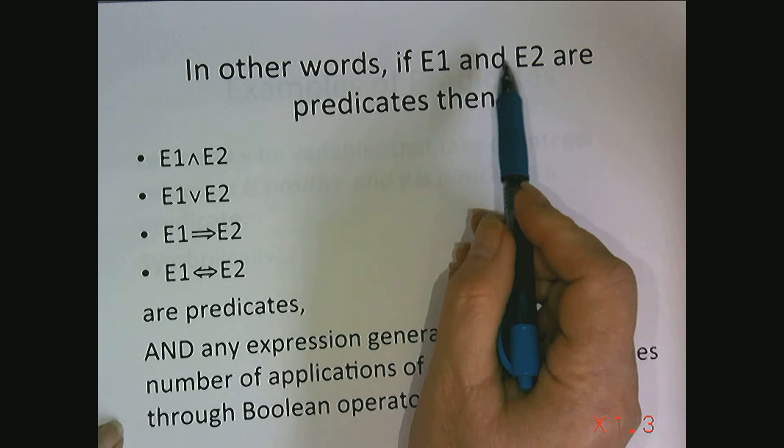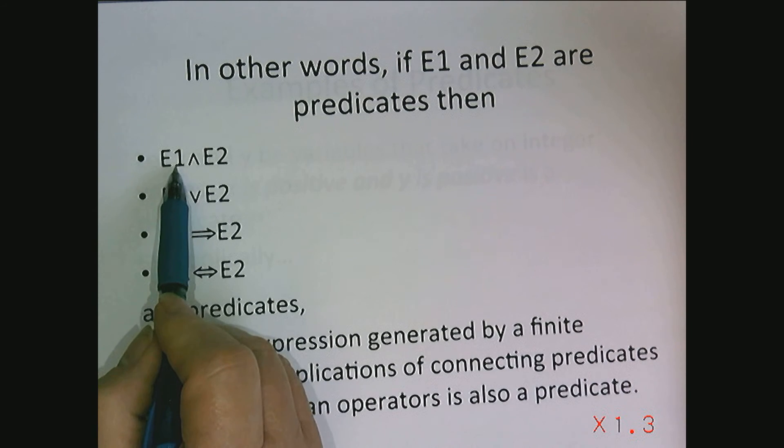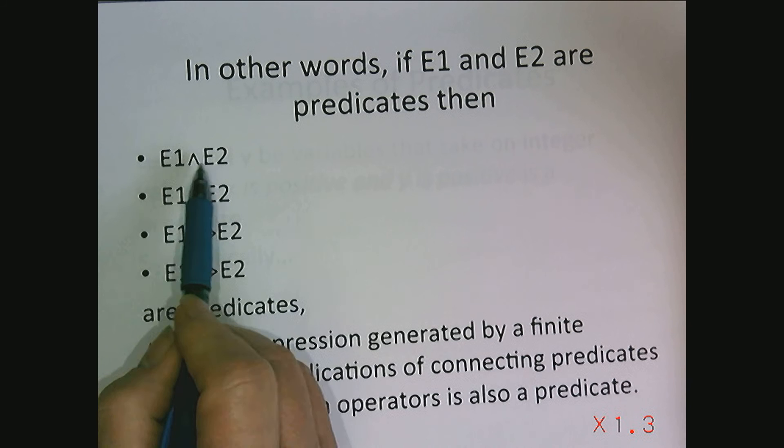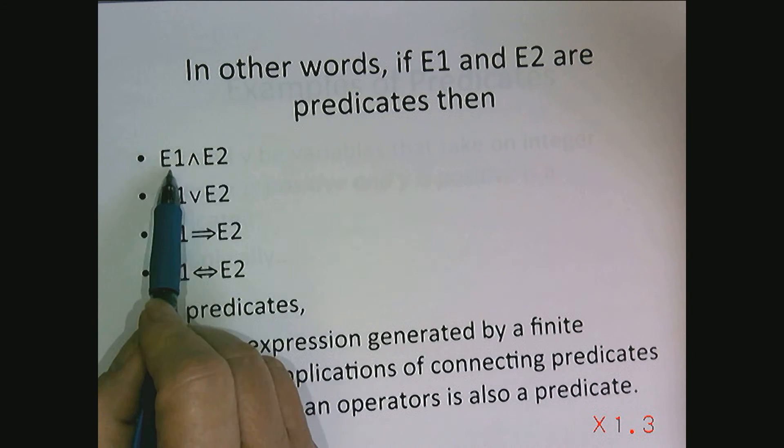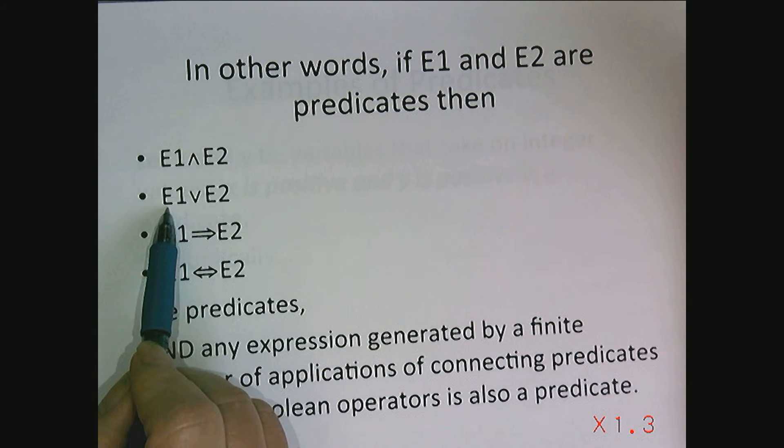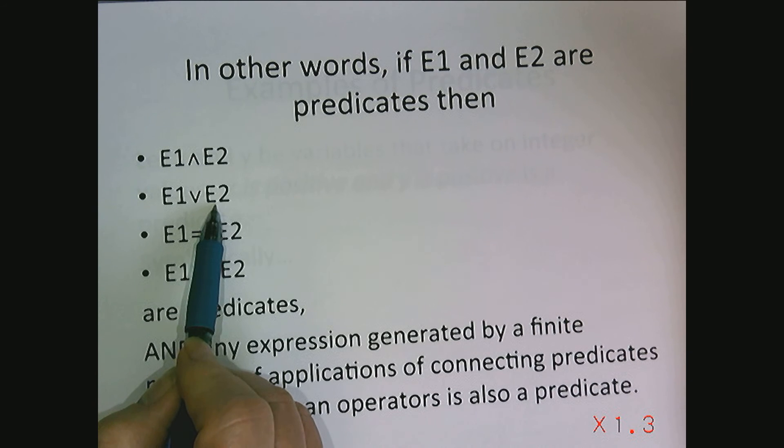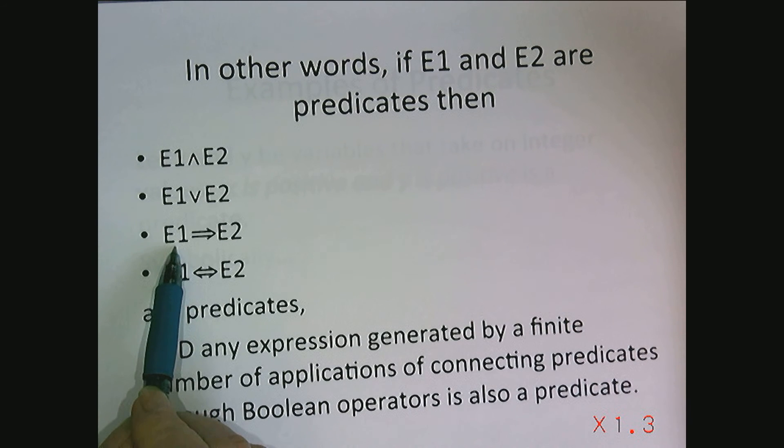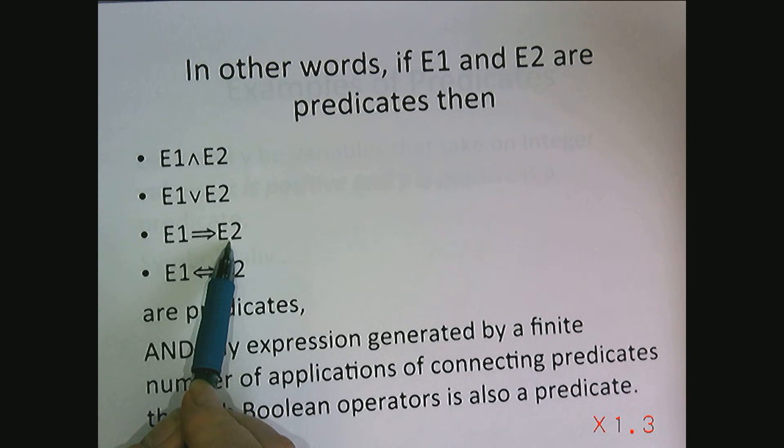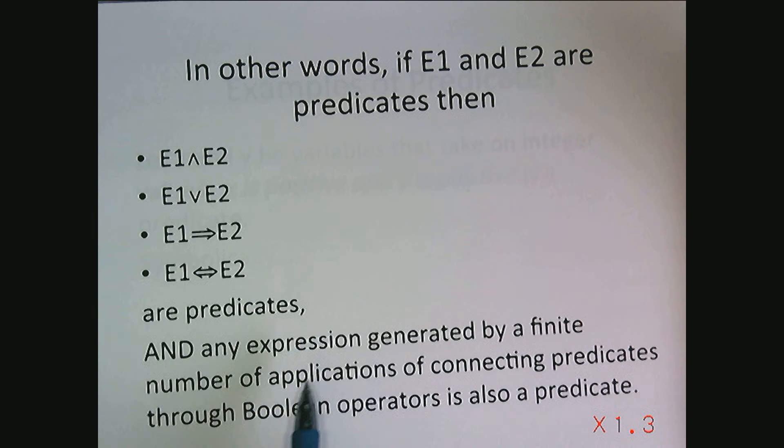If expression 1 and expression 2 are predicates then if we connect them using conjunction the result is going to be a predicate. Using disjunction the result will be a predicate. Connecting through implication will yield another predicate. And equivalence, so E1 is equivalent to E2, is also a predicate. In fact, any expression generated by a finite number of applications of connecting predicates through Boolean operators is also going to be a predicate.